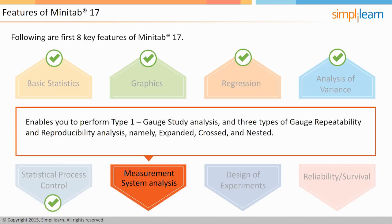The sixth feature on this screen is measurement system analysis. You would do this analysis to determine how much of your process variance arises from variation in your measurement system. This feature enables you to provide type 1 gauge study analysis and three types of gauge repeatability and reproducibility analysis, namely expanded, crossed, and nested. All these analyses recognize deficiencies in your measurement system.